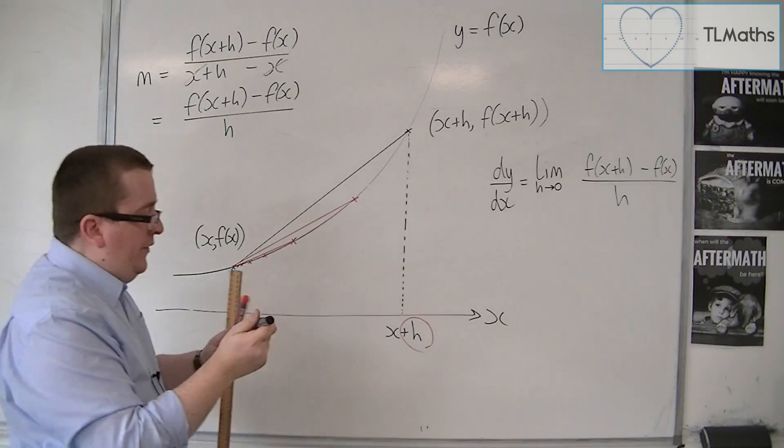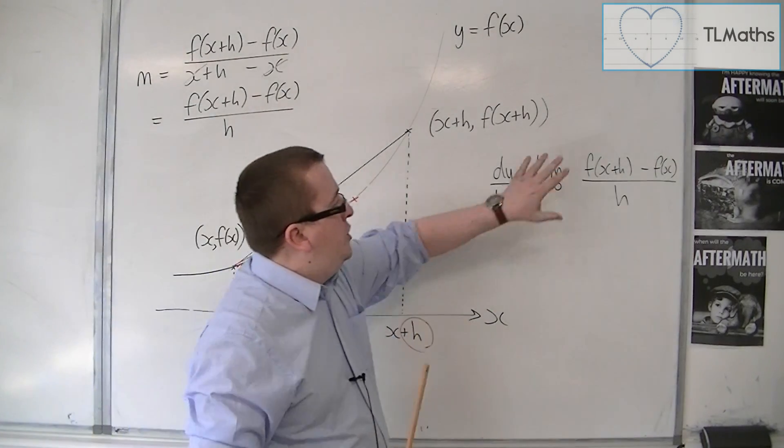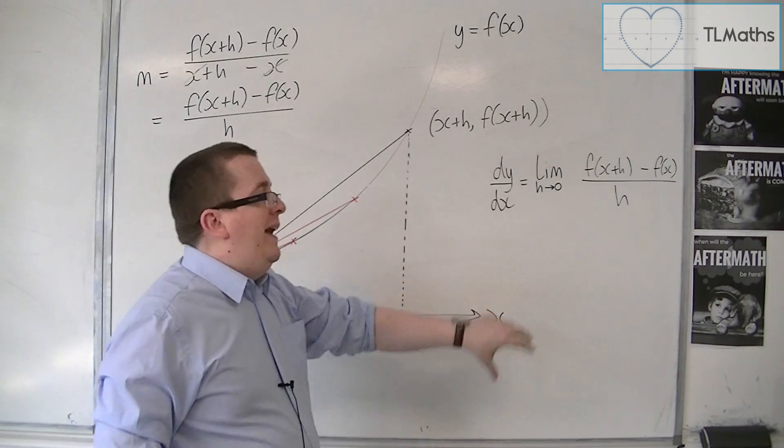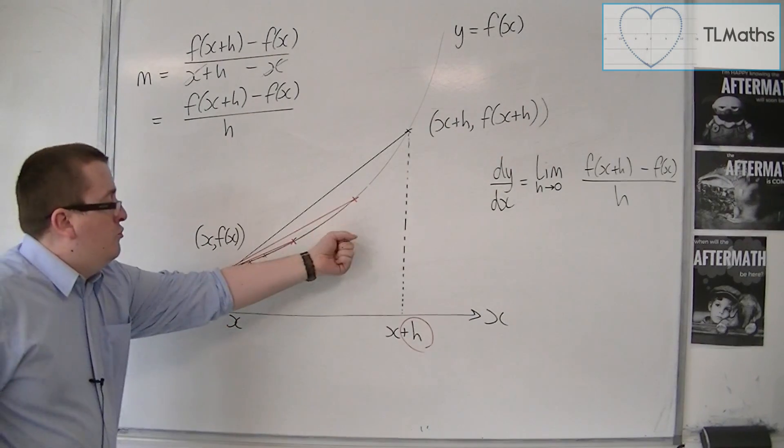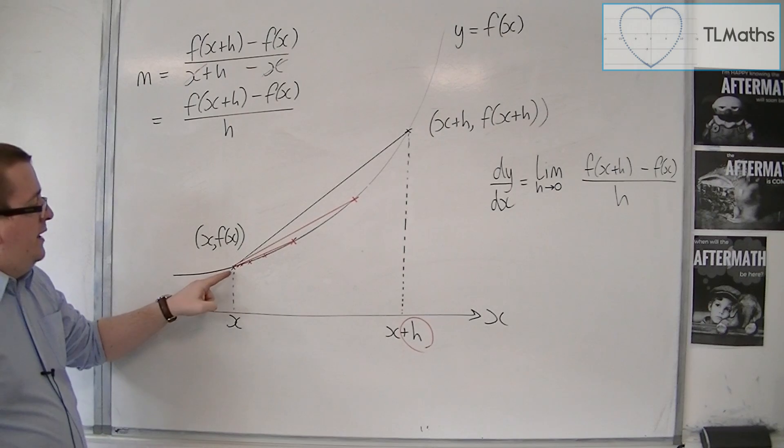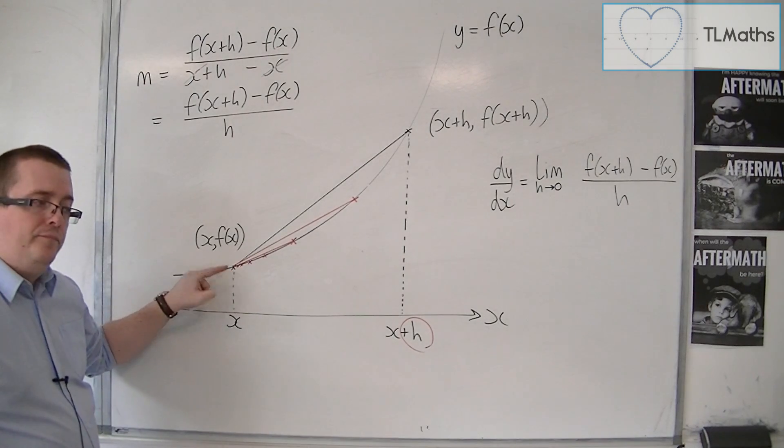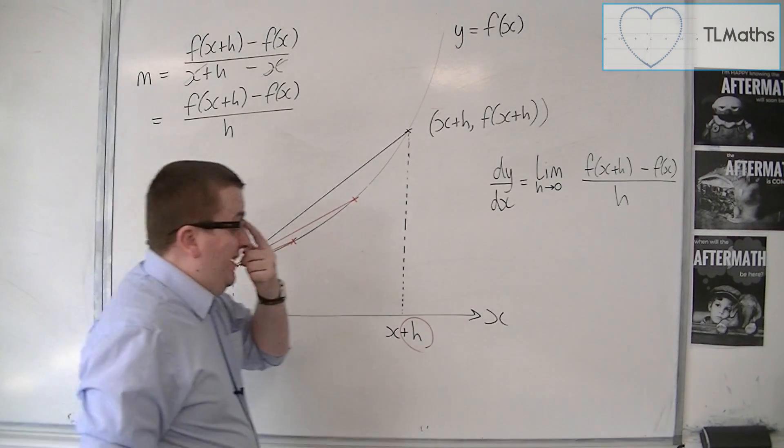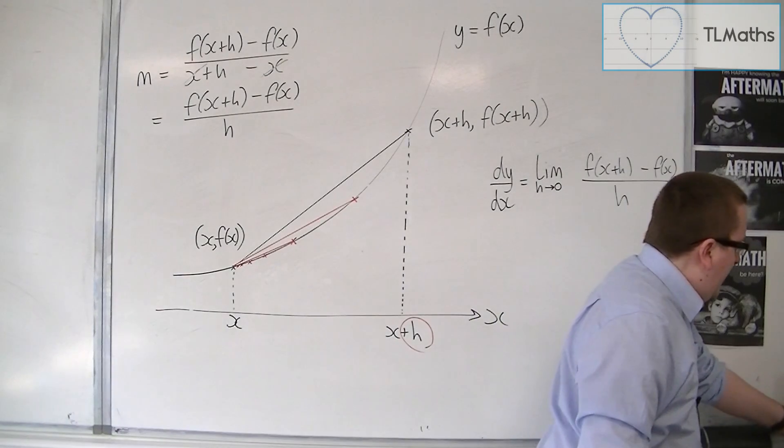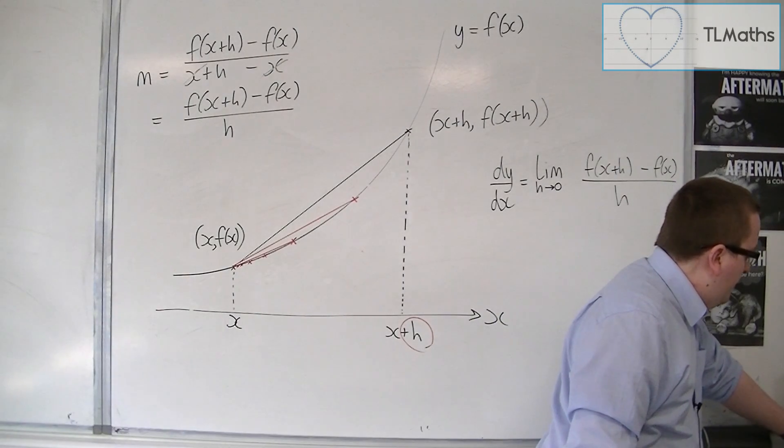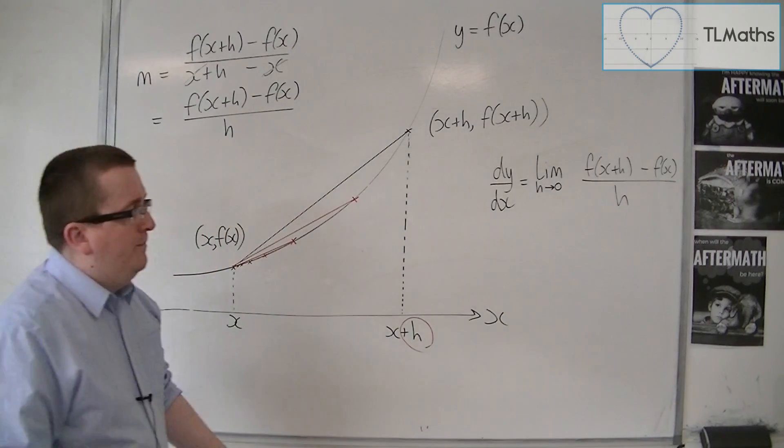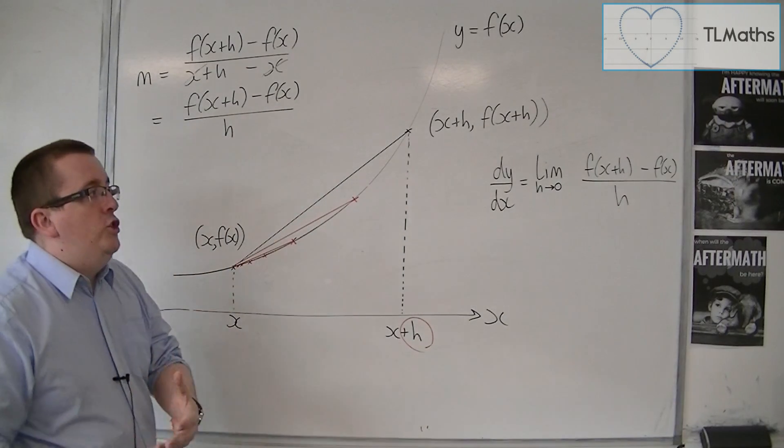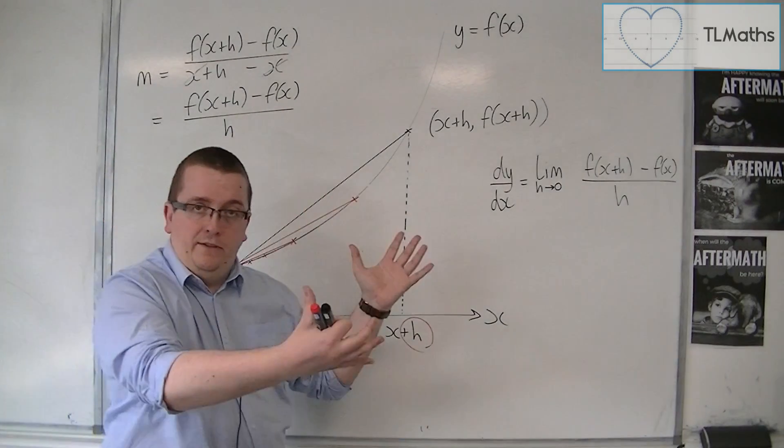So this function here, this limit, shrinks h to 0 and drags that point closer and closer and closer to that one there. So, we can actually write dy by dx, the gradient of the curve, to be this limit. And all differentiation is, is this limit.